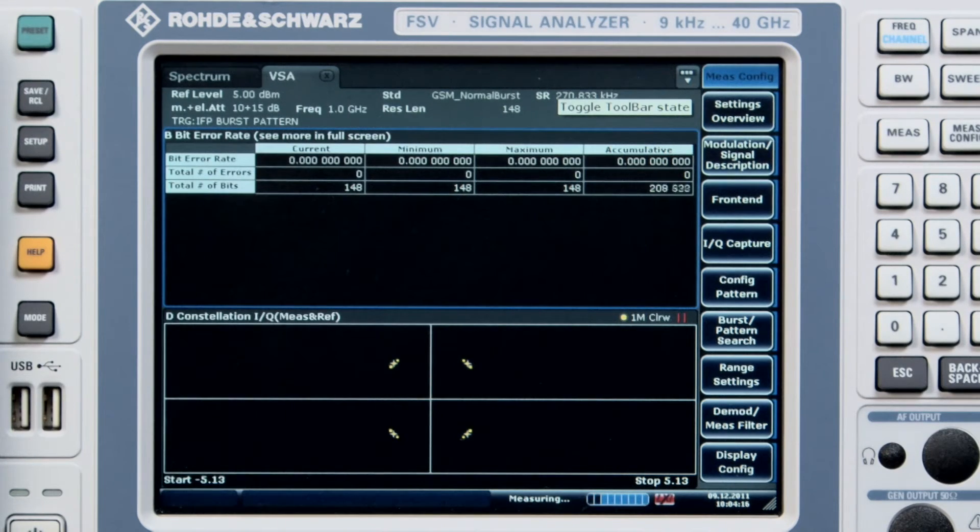As we're generating bit errors, we have four columns which gives us current, minimum, maximum, and cumulative results. In the rows we can see the total number of errors that have been calculated and also the total number of bits that have been captured by the analyzer software.